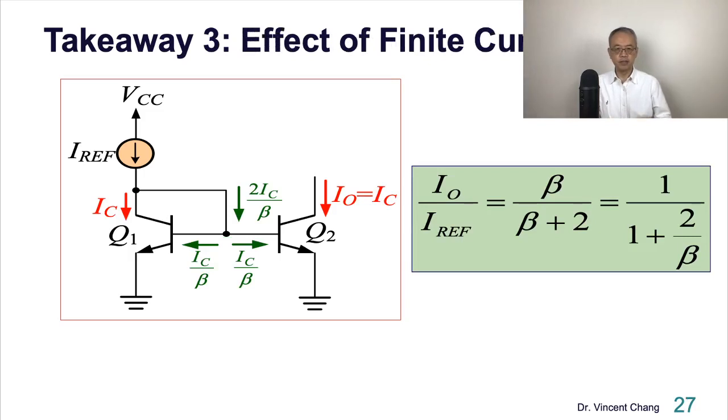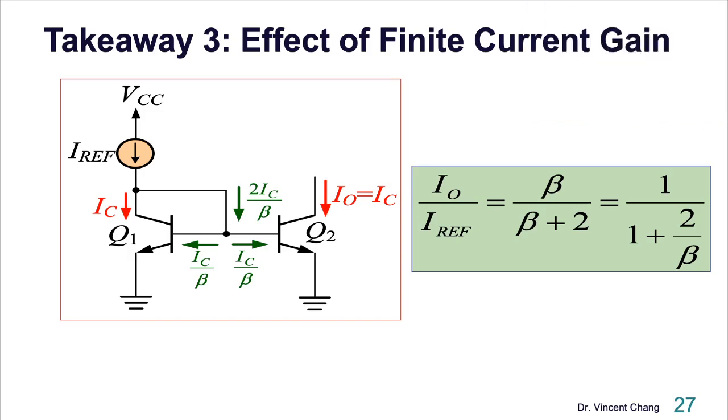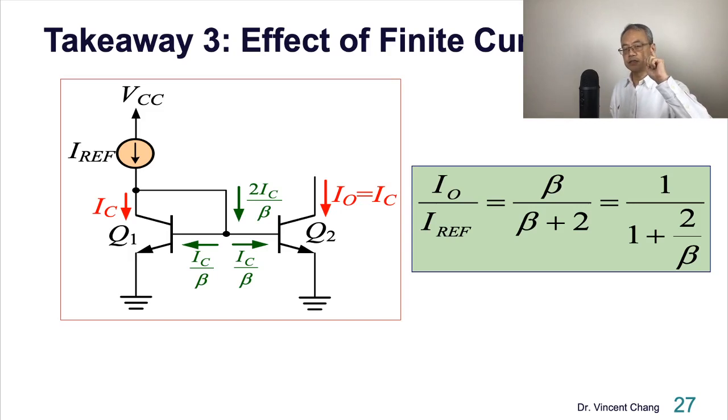Number three, pay attention to the effect of finite gain on the impact of current transfer ratio. The mirror ratio is not one-to-one. In this case, if beta is 100 and reference current is 1 milliamp, if you consider the impact of beta, what is IO? The IO is going to be 0.98 milliamp. That's the imperfection of reality of this current mirror.